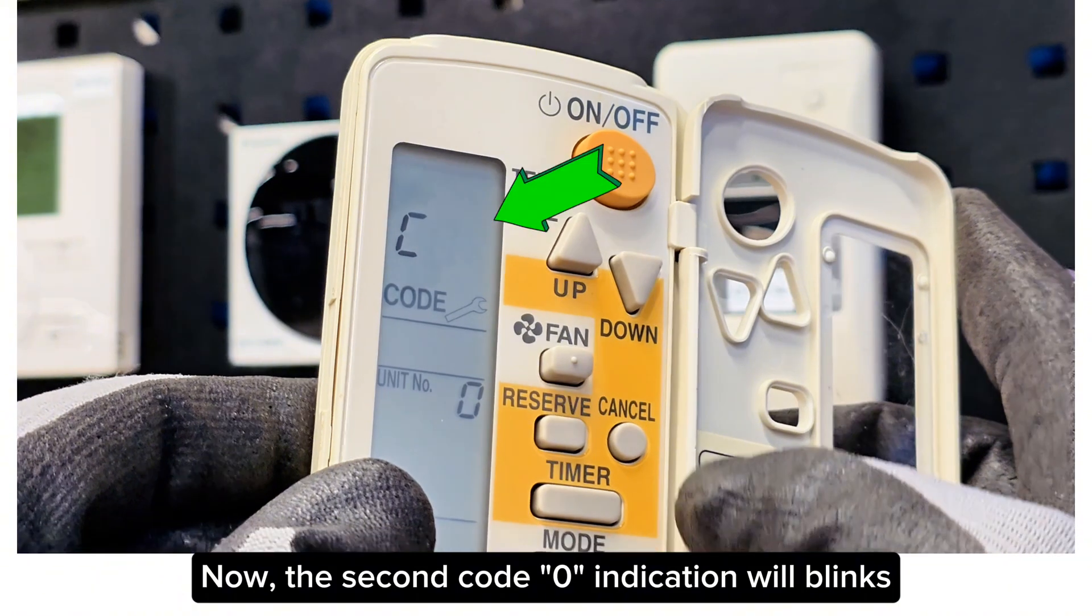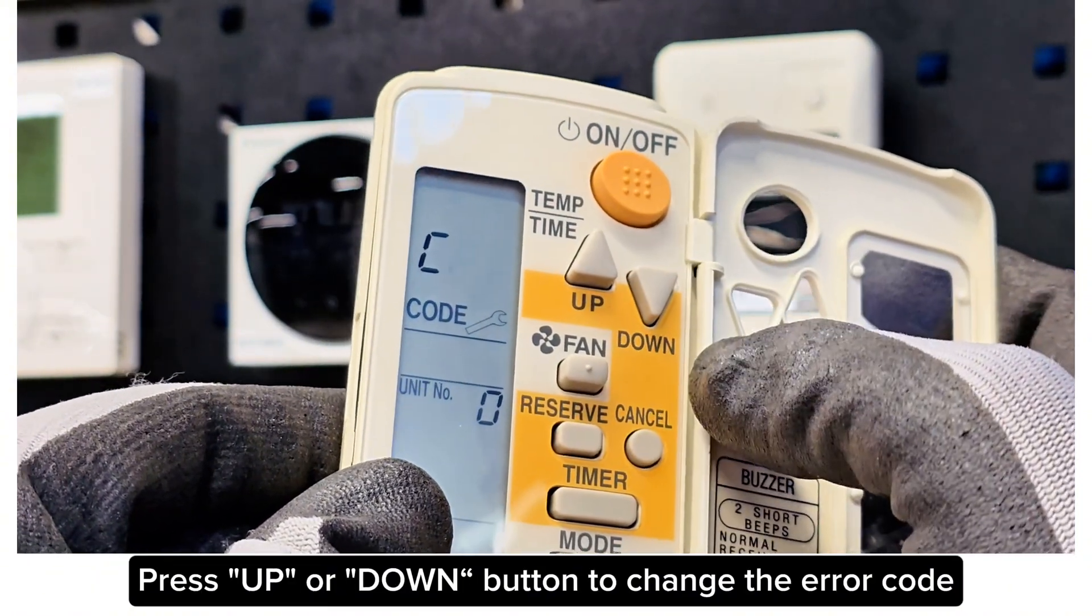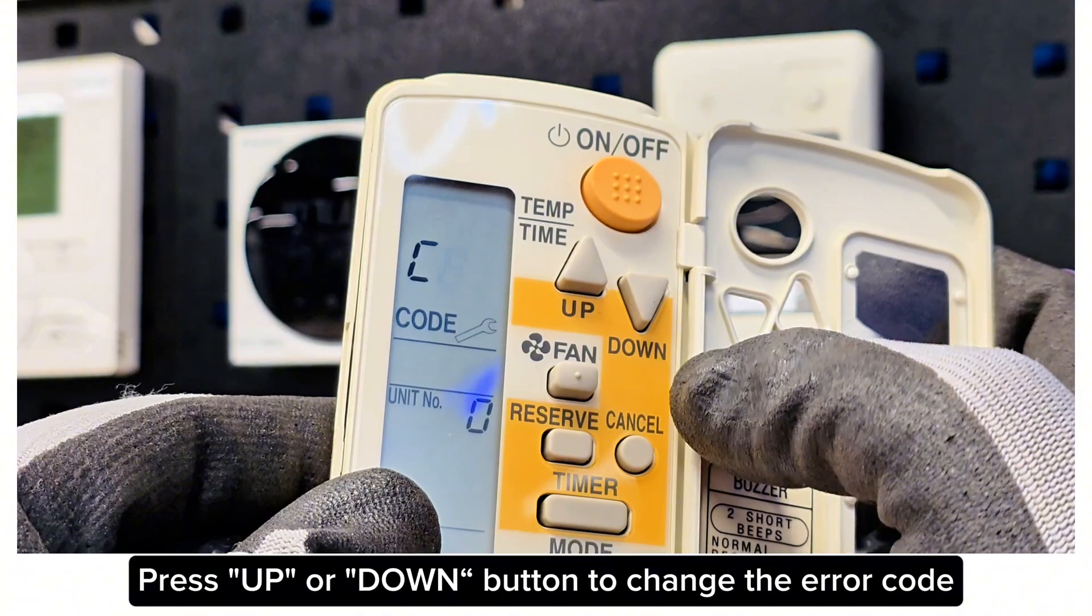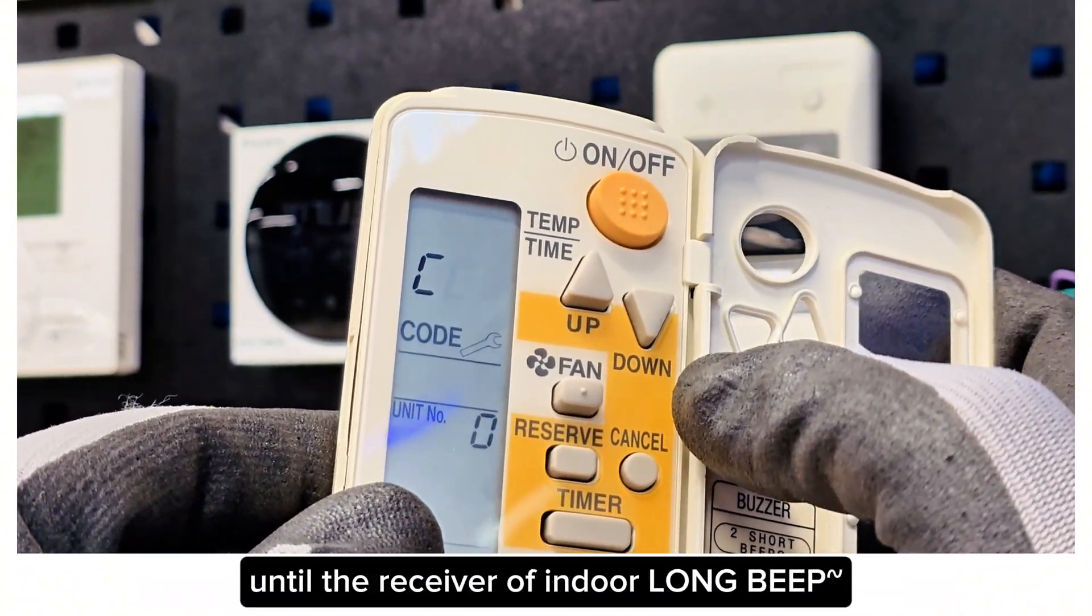Now, the second code zero indication will blink. Press Up or Down button to change the error code until the receiver of Indoor Long Beep.